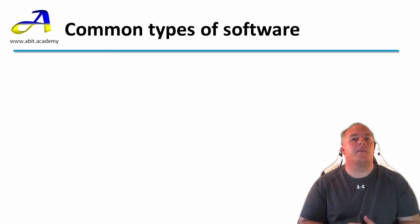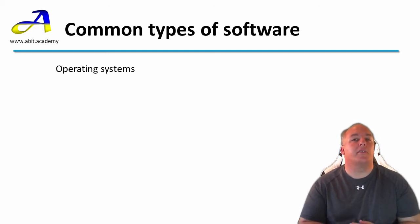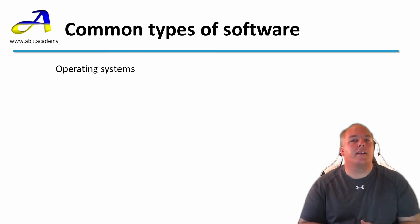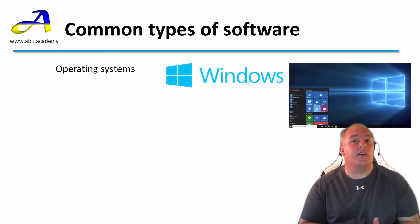Let's take a look at some common types of software. Operating systems are essential to the operating of any computer. They give the machine the essential instructions for it to work and also provide a universal interface to the hardware for the other types of software to work with. In the next lecture we will be taking a detailed look at what operating systems do. Common names in this sector are Microsoft Windows, with Windows 10 being the latest version.